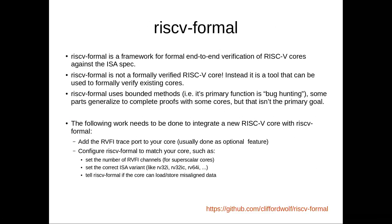RISC-V Formal is a framework that allows us to do end-to-end formal verification of RISC-V processors against a formal version of the ISA specification. RISC-V Formal is not a formally verified processor - instead, if you have a RISC-V processor, you can use RISC-V Formal to prove that your processor conforms to the ISA specification. This is mainly using bounded methods and is good for what we call bug hunting. Usually when you have a processor and can't reach a bad state within short bounds, you have high confidence that your processor implements the ISA correctly.